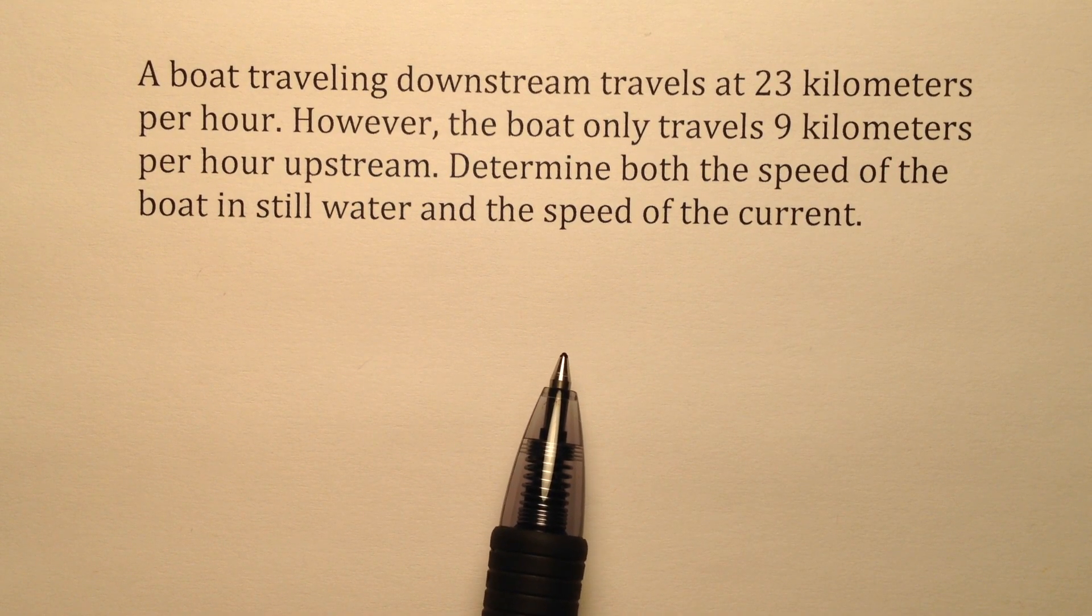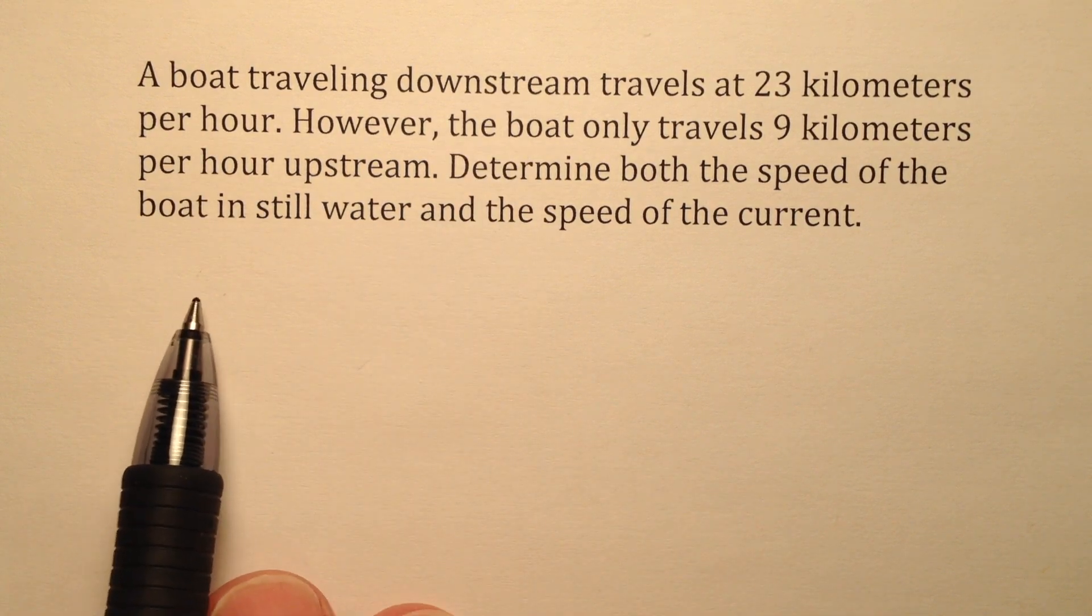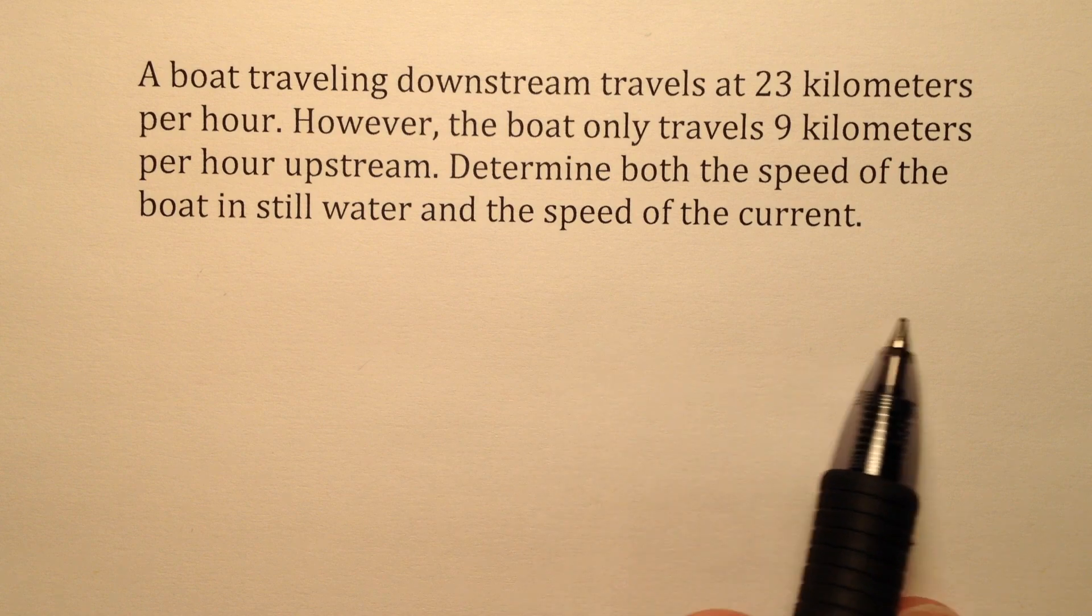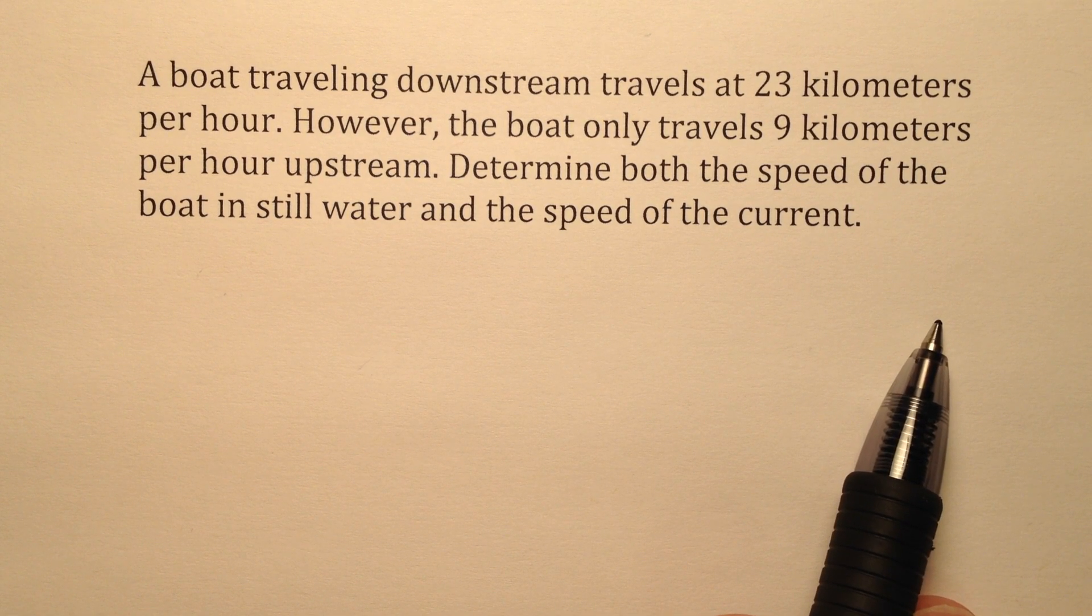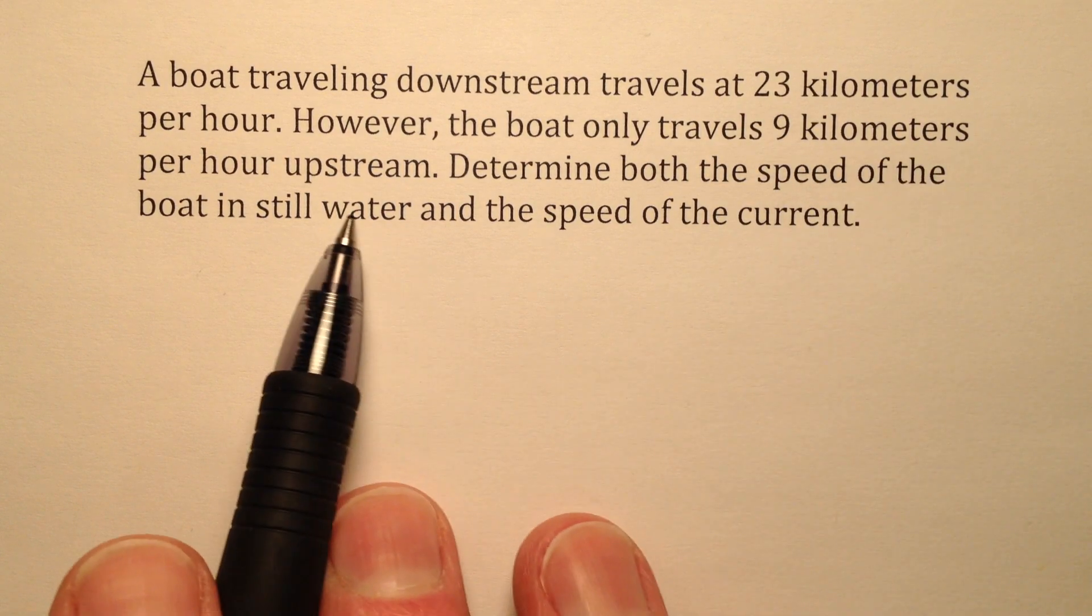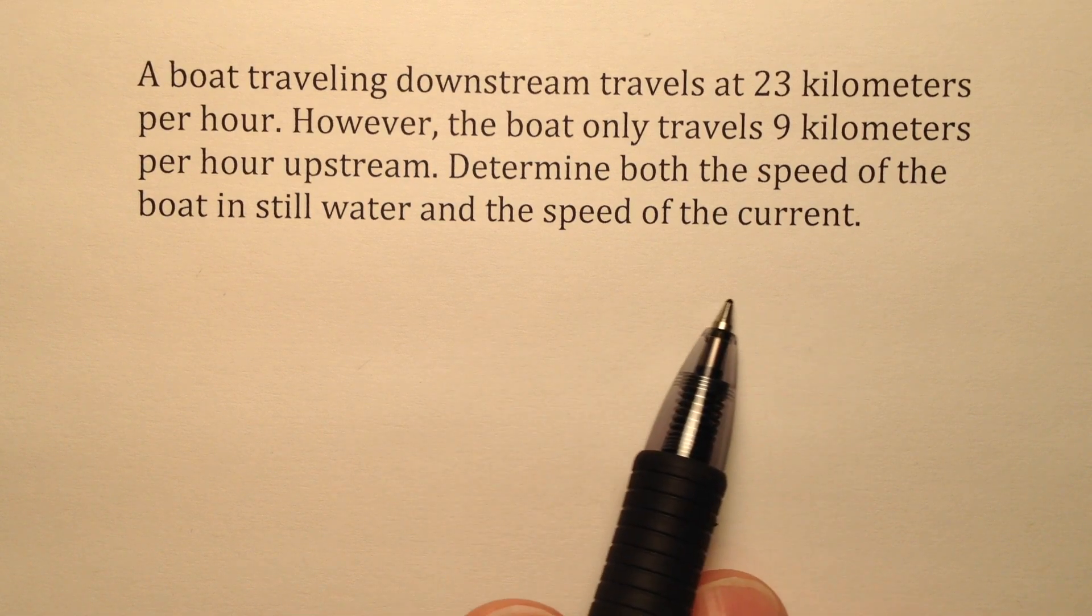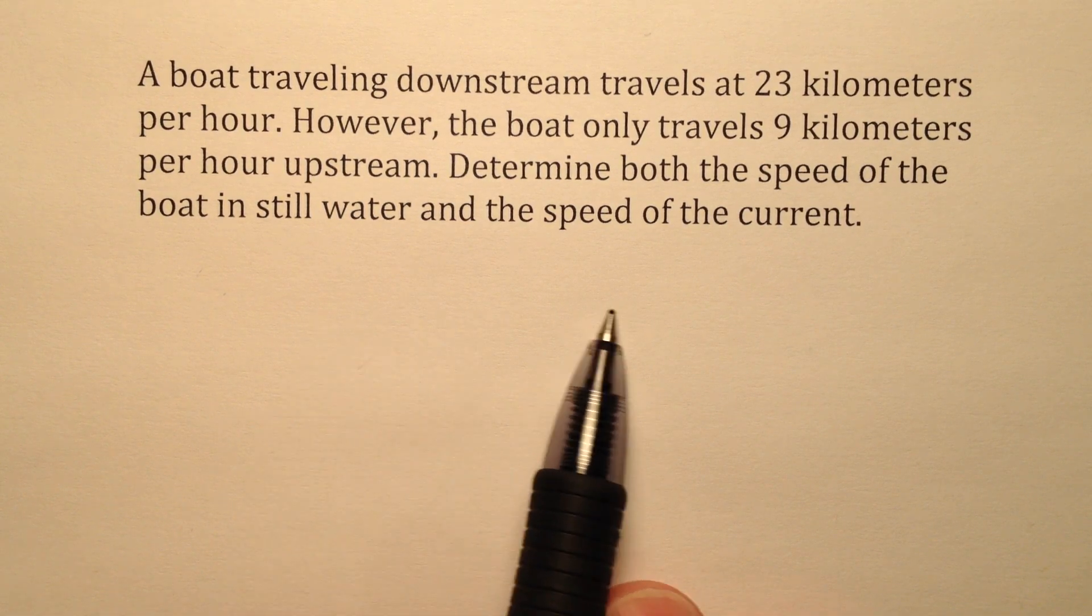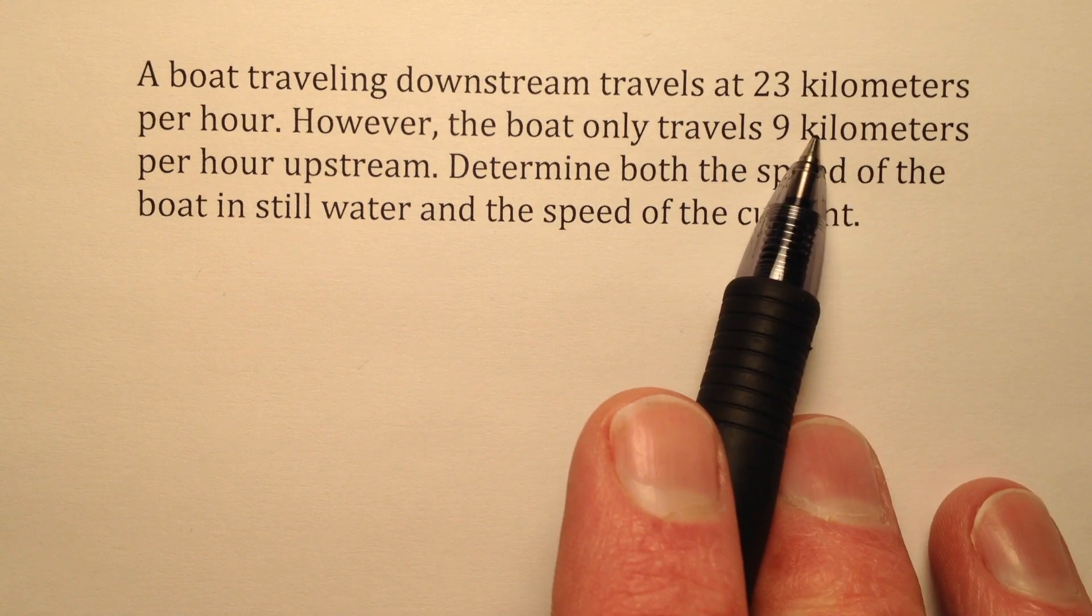We need to understand what's going on. A boat traveling downstream means the water is pushing the boat along, so we have the speed of the boat plus the speed of the current helping us, and that's 23 kilometers per hour. When you go upstream, the boat's fighting the current, so we have the speed of the boat minus the speed of the current, because that's pushing you backwards, and that's 9 kilometers per hour.